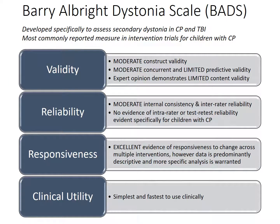The Barry-Albright dystonia scale, based on the Burke-Fahn-Marsden, was developed to assess secondary dystonia severity in patients with CP and acquired brain injury. It was the most commonly reported measure in trials involving children with CP. It shows moderate validity and reliability and excellent responsiveness to change across multiple interventions for children with cerebral palsy.